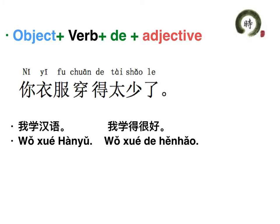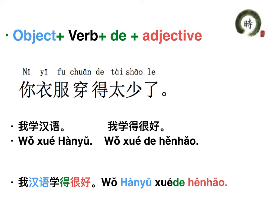Let me give you another example. 我学汉语 — I learn Chinese. 我学得很好 — I learn very well. If we combine these two sentences: 'I learn Chinese very well,' then 学 needs to match both 汉语 and 得很好. In that case we put 汉语 before 学: 我汉语学得很好. 大家都明白了吗？